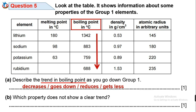Question 5b: Which property does not show a clear trend? To answer this perfectly, let's analyze each column. Starting from melting point, it decreased from 180 to 98 to 63, so melting point has a decreasing trend.